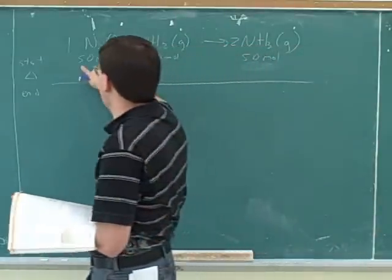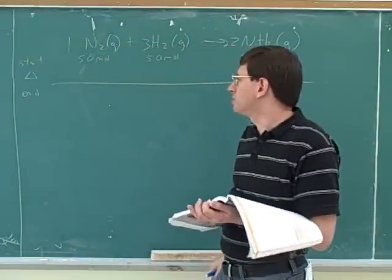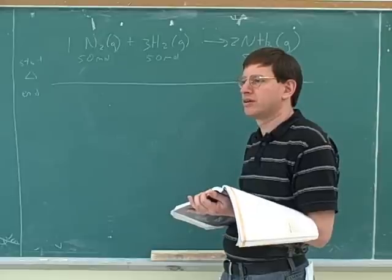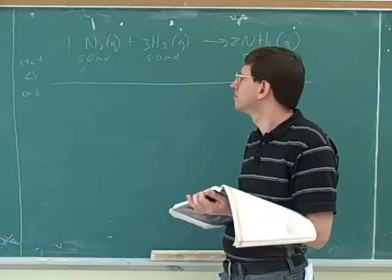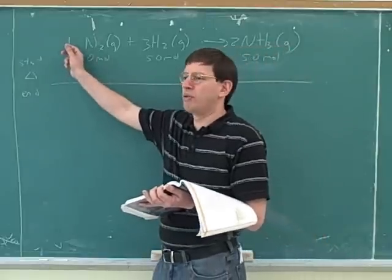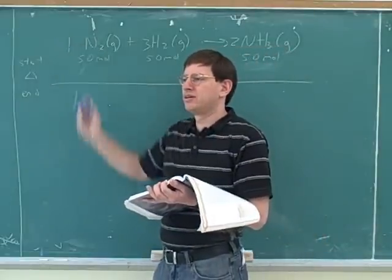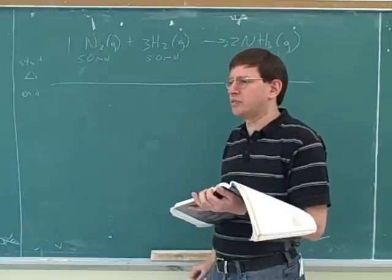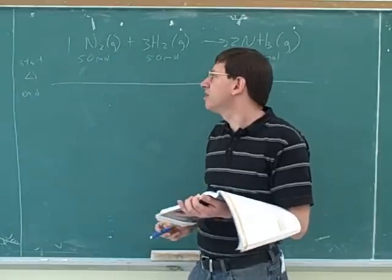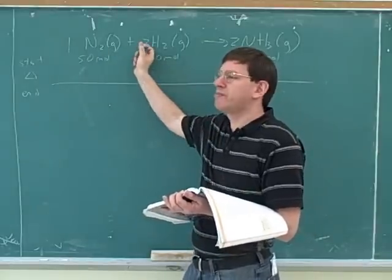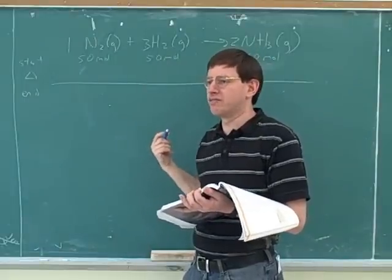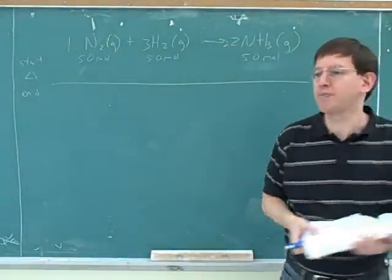Now, already here we can start to see a common student mistake. So in this problem, how much nitrogen gas are we starting with? 50 moles. Are we starting with 50 moles or are we starting with one mole? According to the start-change-end table, we're starting with 50 moles. But the point I wanted to make is many students misinterpret these numbers as your starting amounts. The stoichiometric coefficients are not the starting amounts of the compounds. They're just hypothetical amounts.